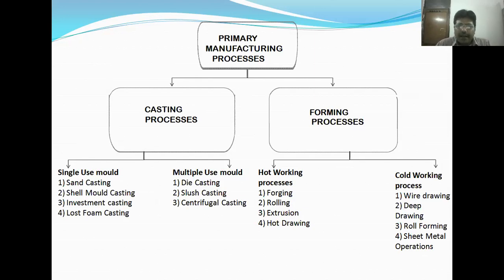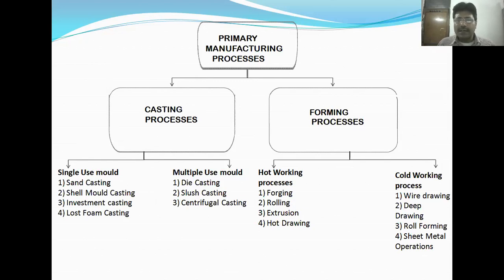Primary manufacturing processes are broadly classified into casting processes and forming processes. Forming processes are processes in which, apart from heat, pressure is also applied. Forming processes need pressure as well as heat, or without heat. If heat is applied, the forming processes are known as hot working processes. If heat is not applied, those processes are known as cold working processes. In cold working processes, work is done at normal temperature, though sometimes a little heat is applied.